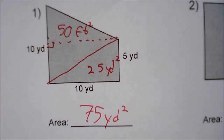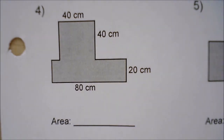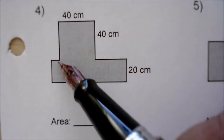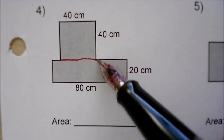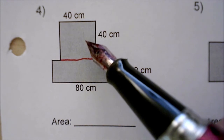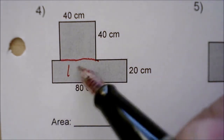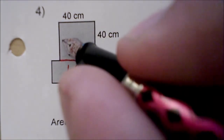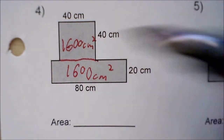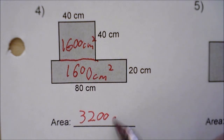Let's take a look at the other example — number 4 from the homework I assigned. There is only one good place that you can really draw a line. While you could separate this into two vertical lines going down, an easier way would be to draw one horizontal line, which gives you a rectangle on the bottom and a square on the top. 80 times 20 will be 1,600 centimeters squared, and 40 centimeters times 40 centimeters will also give me 1,600 centimeters squared. Combining the two amounts gives me 3,200 centimeters squared.